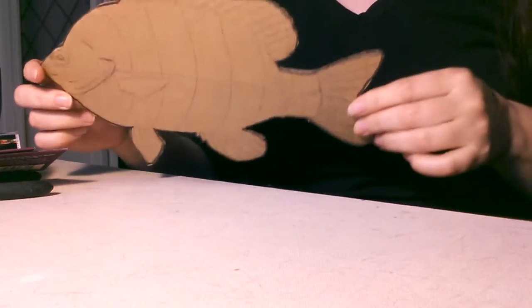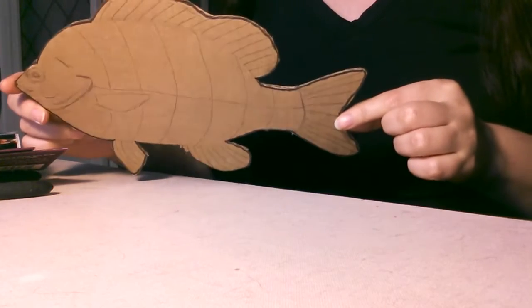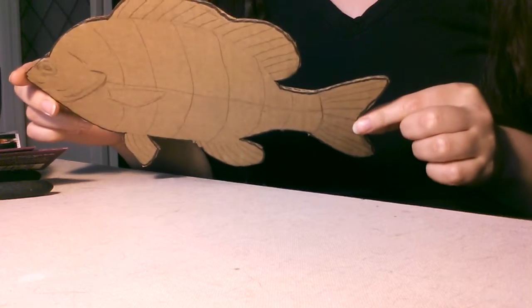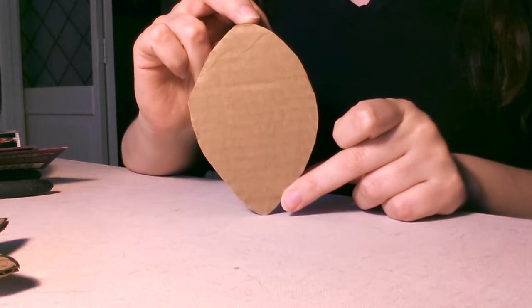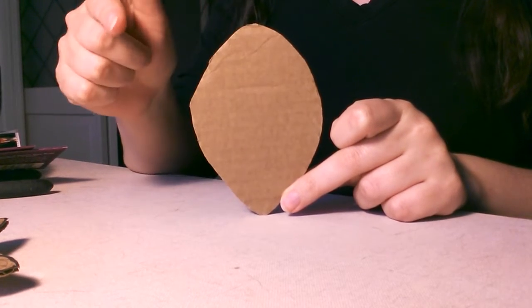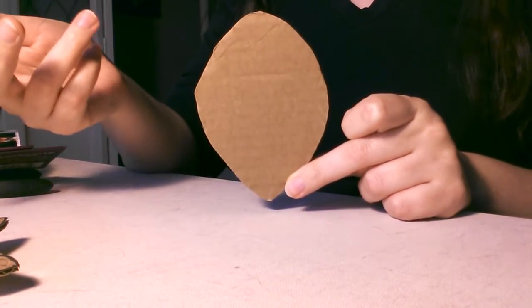So to start out, I created myself a couple of cardboard templates. This is a fish, keeping with the deep blue sea theme. And so that's the profile of the fish. I also created a cardboard form for the volume of the fish, and you're going to see why I did this in a second.